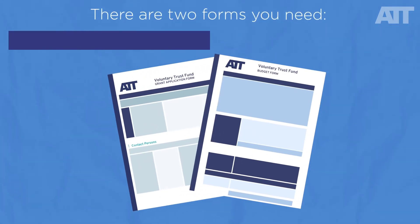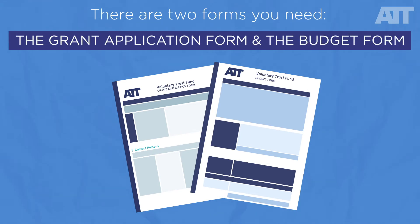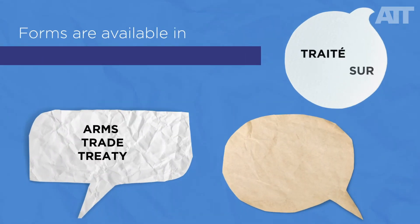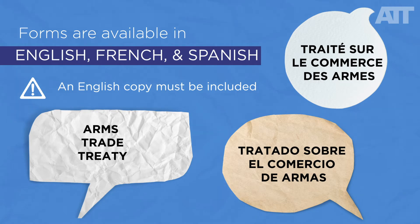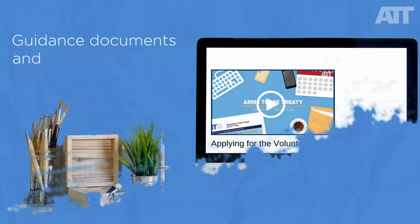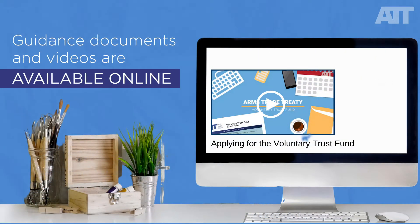There are two forms you need to submit to apply for funding under the VTF: the Grant Application Form and the Budget Form. Application forms are available in English, French, and Spanish. Take note — an English translation must be included in your application if you choose to use the French or Spanish form. Guidance documents and separate videos on how to complete the forms are also available on the ATT website.